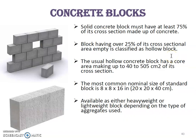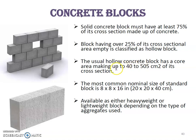The solid concrete block must have at least 75% of its cross-section made up of concrete. A block having over 25% of its cross-section empty is classified as a hollow block. The usual hollow concrete blocks have 40 to 50% of their cross-section as empty space. This shows the nominal sizes of concrete blocks.